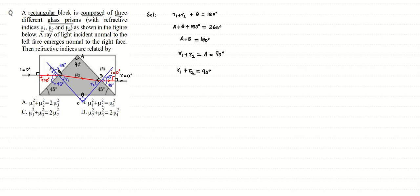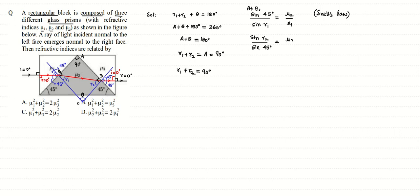Applying Snell's law at point B: sin 45° / sin r1 = μ2 / μ1. Rearranging, sin r1 = (μ1 / μ2) × sin 45° = μ1 / (μ2 × √2).